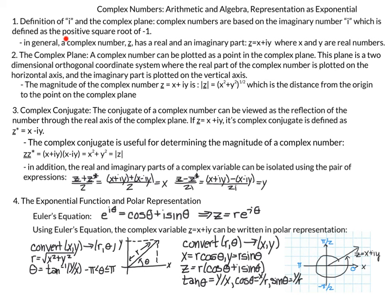We'll start our overview by looking at the definition of i, because complex numbers are based on the imaginary number i, which is defined as the positive square root of negative one. In general, a complex number z has a real and an imaginary part — z is equal to x plus iy, where x and y are both real numbers. If we want to graph a complex number, we need the complex plane, where we plot the real part along the horizontal axis and the imaginary part along the vertical axis.